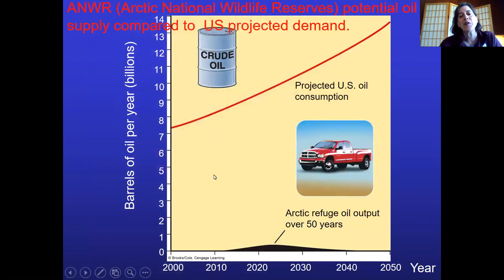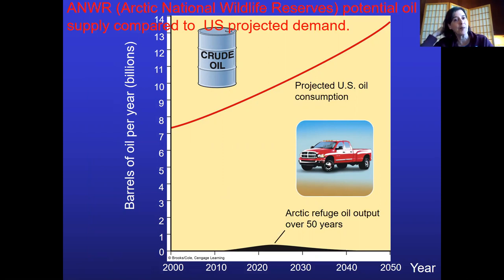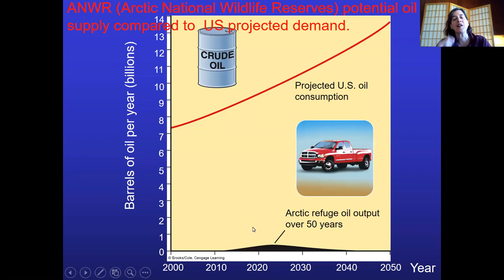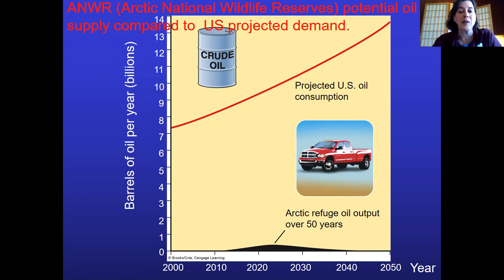The Arctic National Wildlife Refuge, which President Trump has wanted to open up, does have a fairly decent-sized oil reserve. But relative to our demand, it's not that much — it should really be an emergency-only reserve, because it's a wildlife refuge and it would be preferable not to drill for oil up there.